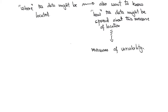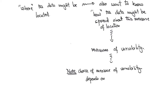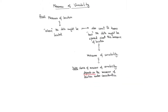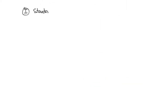It is very important to note that the choice of the measure of variability will depend on the choice of measure of location that we have under consideration. So if we have the measure of location as a mean, the corresponding measure of variability will be different from what it would be if we had the median as our measure of location. We begin by studying the standard deviation from the mean, which is going to be the measure of variability corresponding to the sample mean.